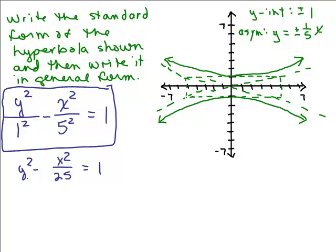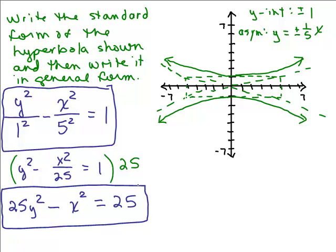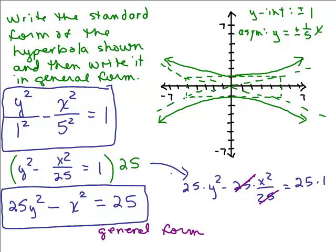How about the general form? I'm going to have to set it equal to 0 and get rid of fractions. Let's multiply both sides by the least common denominator of 25. Y squared times 25 is 25Y squared minus X squared over 25 times 25, the 25's cancel and we have X squared. And we have to remember to do the 25 times 1. This is the general form.